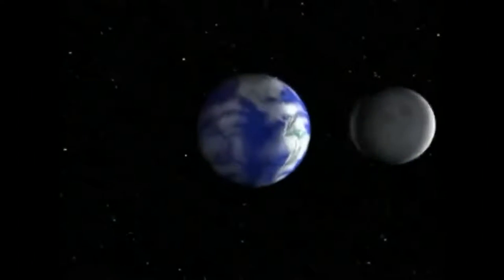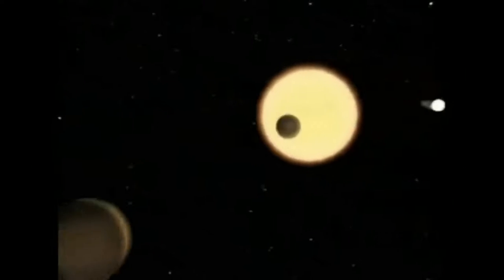Swami Sri Yukteswar, a great Hindu sage, described our solar system and the great cycle. We learn from oriental astronomy that moons revolve around the planets and planets turning on their axis revolve with their moons around the sun.